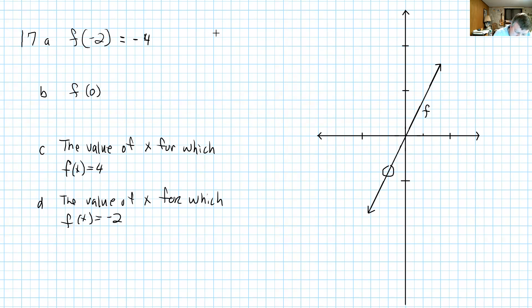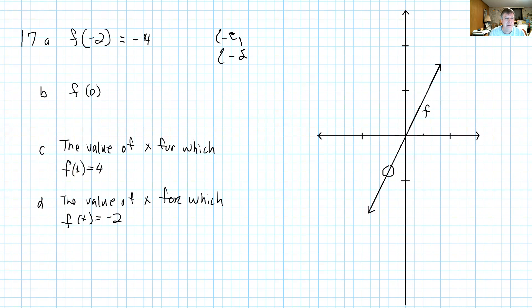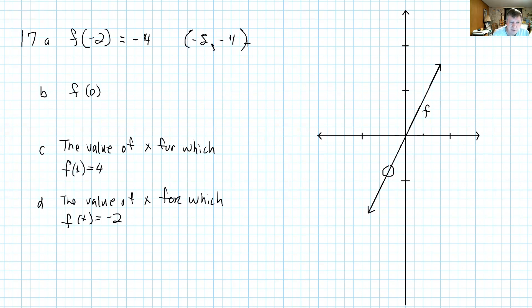That's like saying that the ordered pair negative 2, negative 4 is a point on the graph.